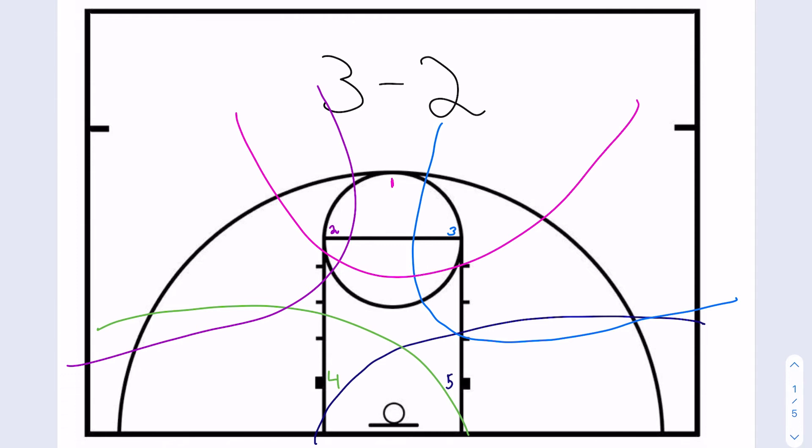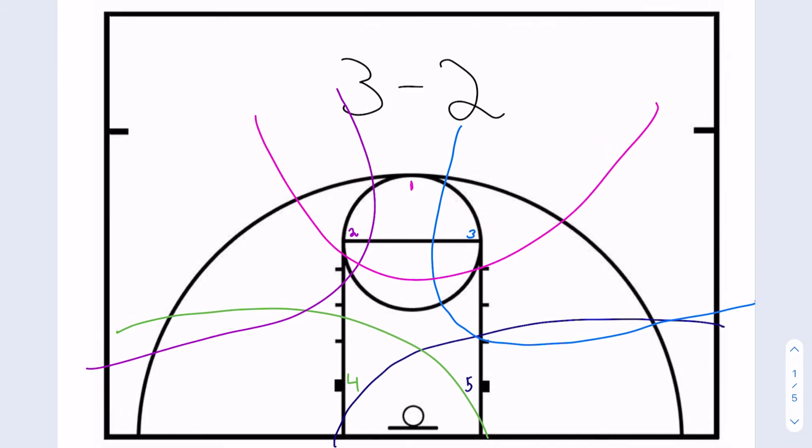So this allows you to focus on those more. A 2-3 is better if you have post players on the other team, but this one's better if you have guards so you can hold those positions.